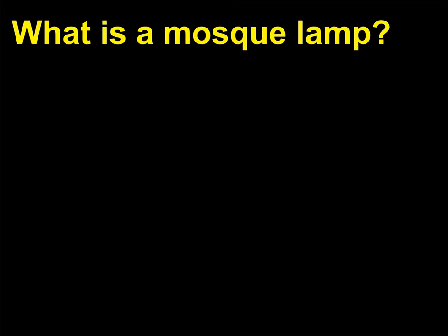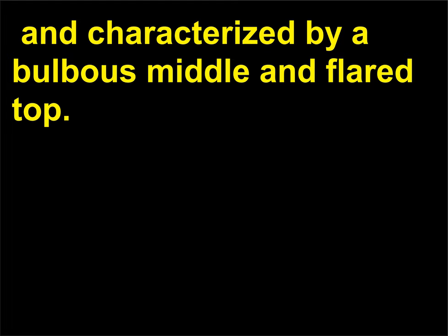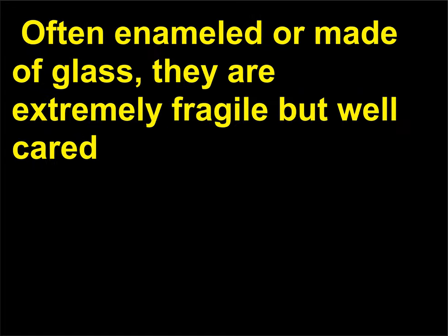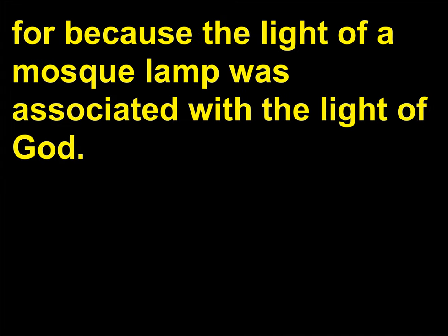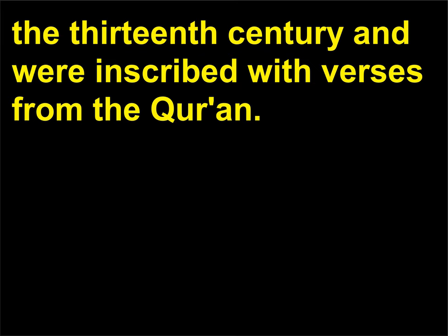What is a mosque lamp? Mosque lamps are oil lamps most closely associated with the medieval period, characterized by a bulbous middle and flared top. Often enamelled or made of glass, they are extremely fragile but well cared for, because the light of a mosque lamp was associated with the light of God. Many mosque lamps were commissioned by Mamluk sultans in Egypt during the 13th century and were inscribed with verses from the Quran.